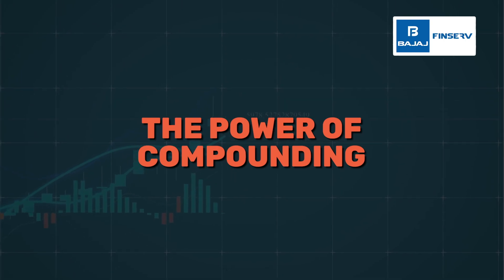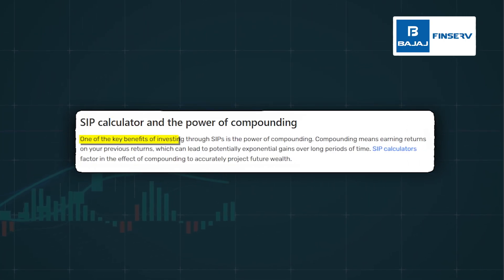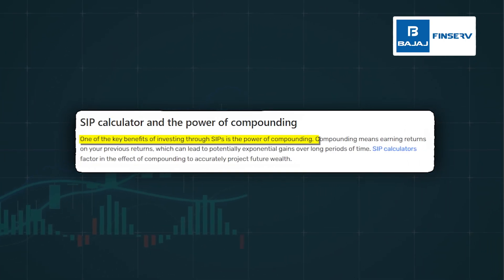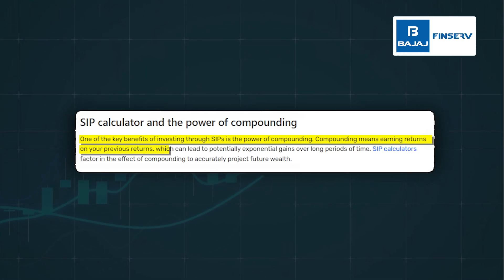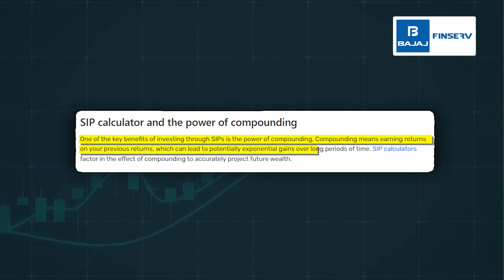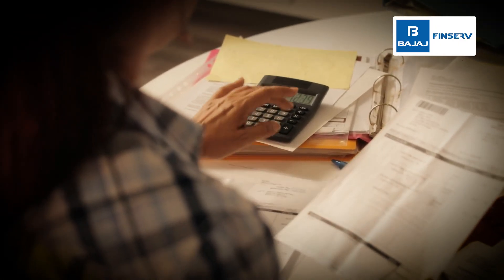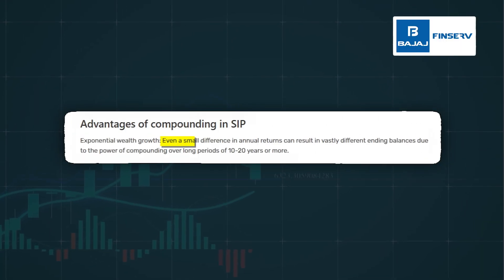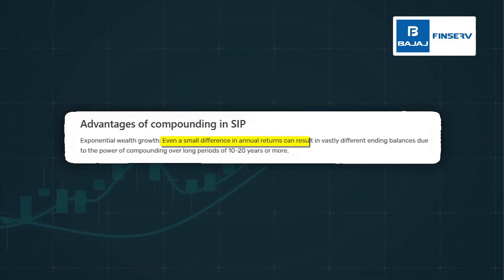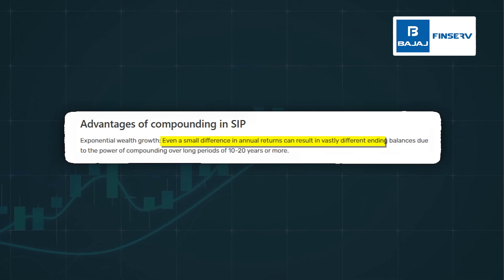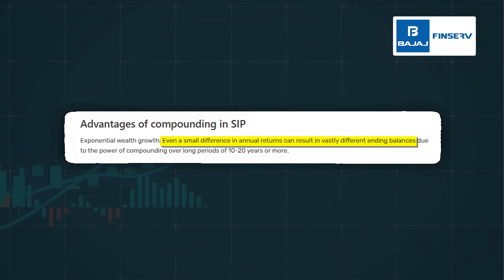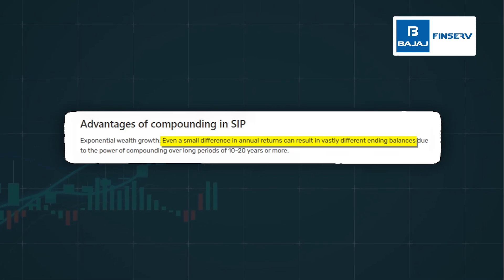What makes SIPs so powerful is the power of compounding. SIP calculators play a crucial role in unlocking this potential by projecting your future wealth based on your investment inputs. Compounding is like a snowball effect for your money — as your returns earn returns, your wealth grows exponentially over time. Even a small difference in annual returns can lead to significantly different ending balances, especially over the long term of 10–20 years or more.